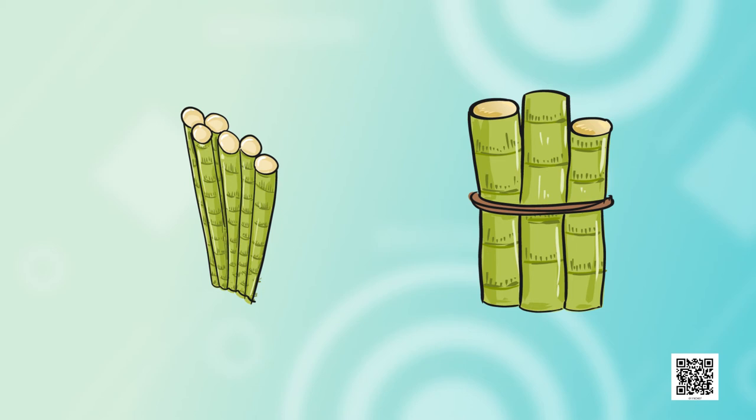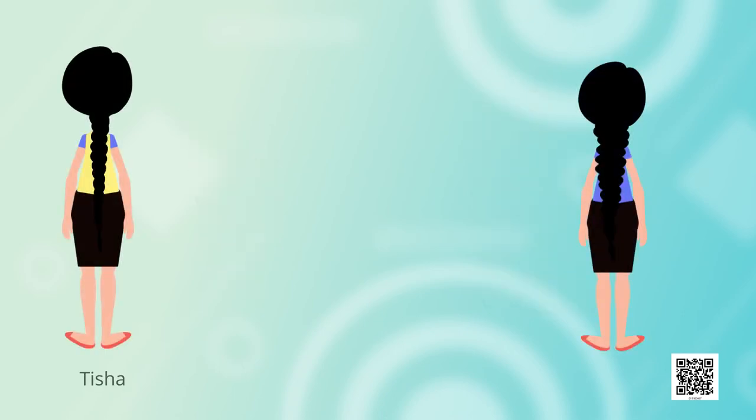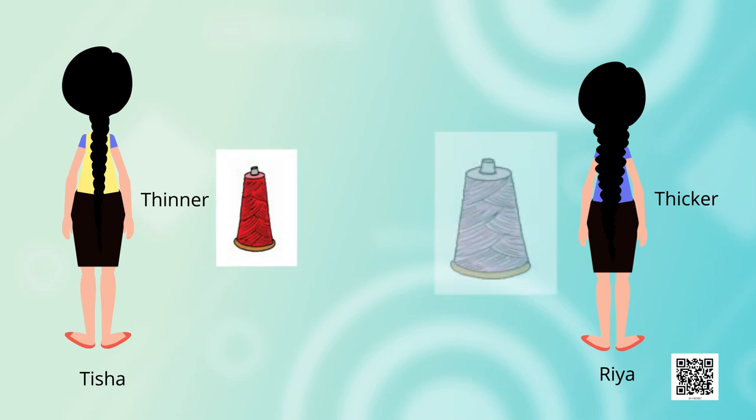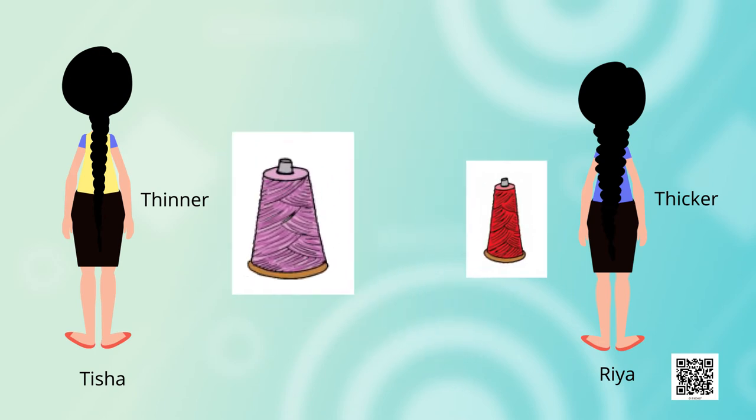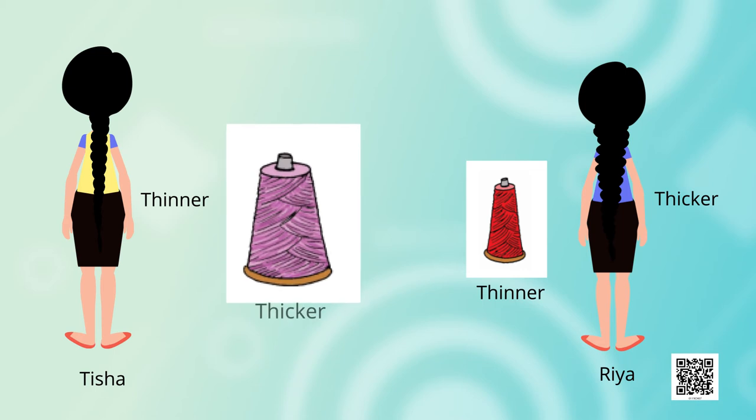Let's leave it here. See, here are two friends, Tisha and Ria. Both have tied their hair in a plait. Ria's plait is thicker and Tisha's plait is thinner. They both have a reel also, a thread reel. Ria's reel is thicker like her plait and Tisha's reel is thinner. What if they both exchange their reels? Then Ria will have thicker plait and thinner reel, and Tisha will have thinner plait but thicker reel.